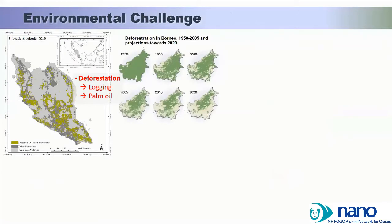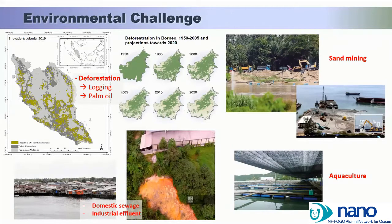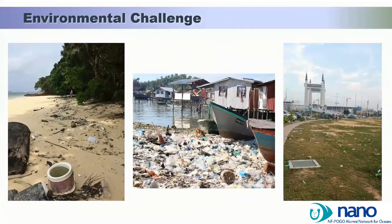Unfortunately, we have some environmental challenges, with one of the main ones being deforestation, which gives way for palm oil plantations. Other environmental challenges include illegal sand mining, effluents or waste from industry and aquaculture. And of course, plastic waste. These photos show quite a common view in Malaysia: plastic waste on the beach, in traditional housing areas, and next to rivers.